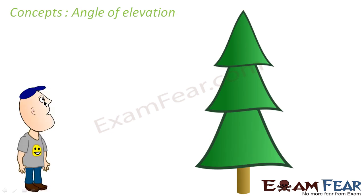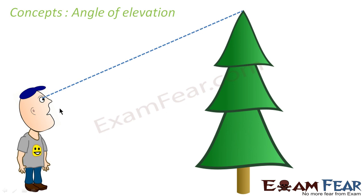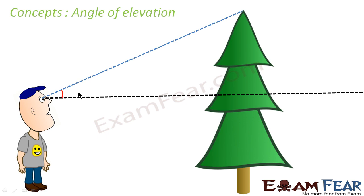Let's take this example. This is a tree and this is a man. The man is looking at the top of the tree. This line is called the line of sight — the line joining the eye of the observer to the point which we are looking at. In the case of angle of elevation, the person has to move his head upward to see the object. The normal position is straight, but he tilts his head up, and this angle is called the angle of elevation.